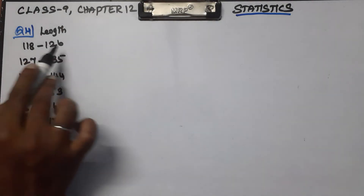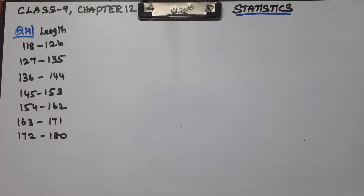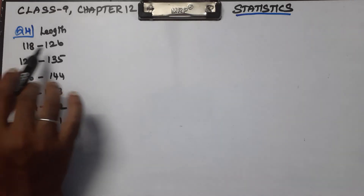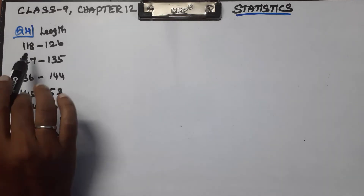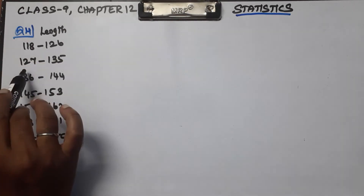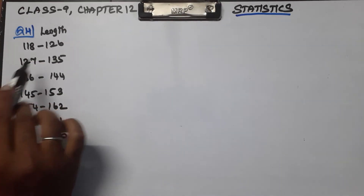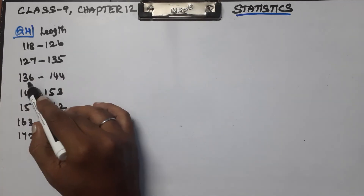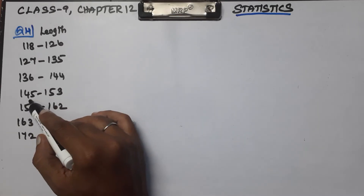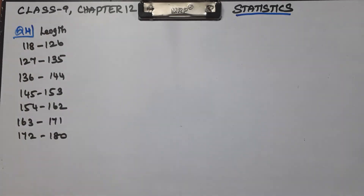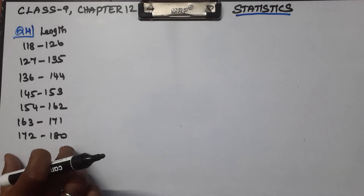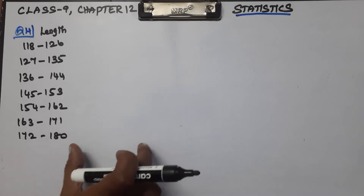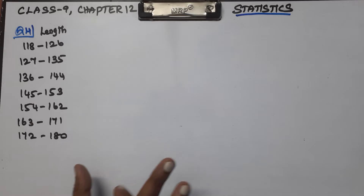This is a class interval. The class intervals will continue. Notice that 126 is followed by 127, and 135 is followed by 136, and 144 is followed by 145 — so this is a discontinuous table. We need to convert this discontinuous table into a continuous table.